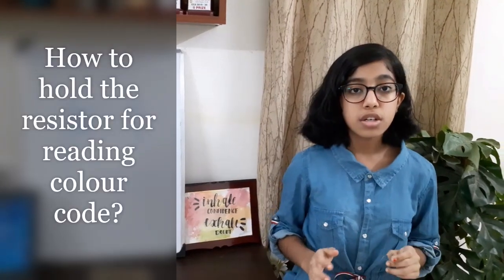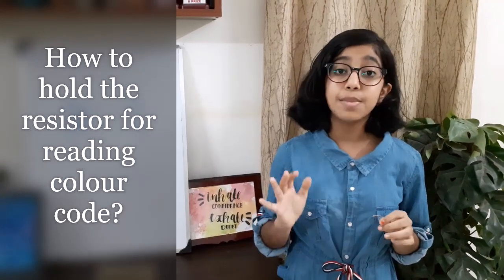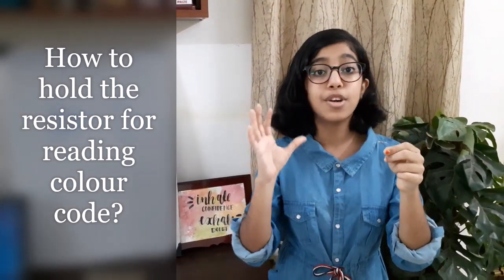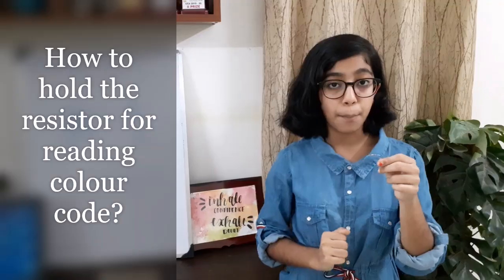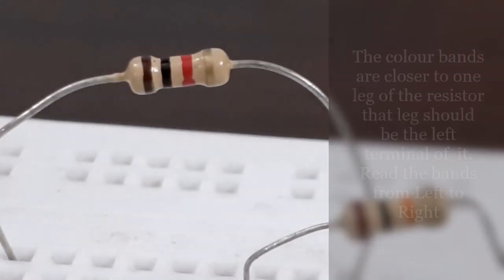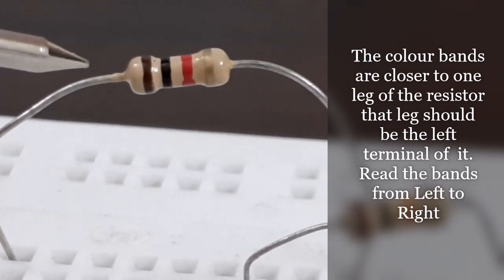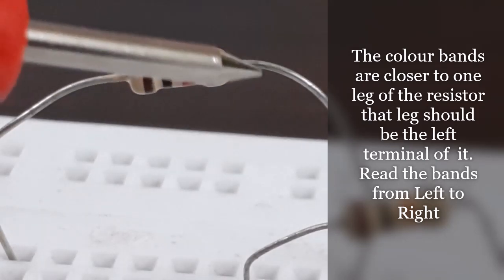Before we move on to find out the resistance of a resistor using a color code, let me tell you how to hold the resistor and which end to start reading from. If you observe a resistor carefully, you can see some color bands are grouped together. These group of bands are close to one terminal and that should be your left terminal. Always read the resistor from left to right terminal.